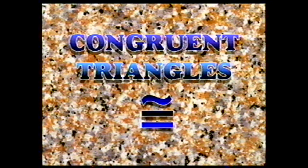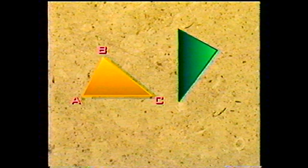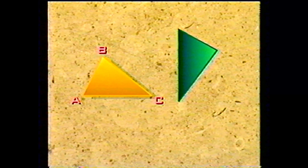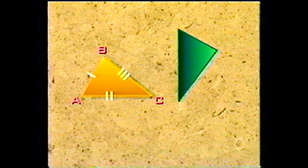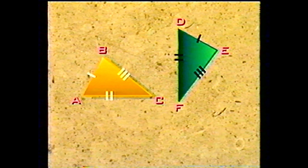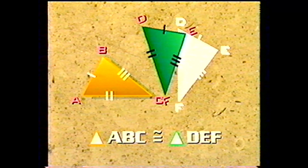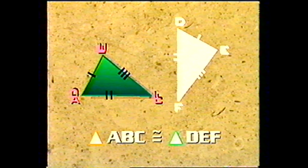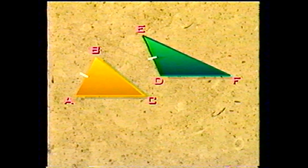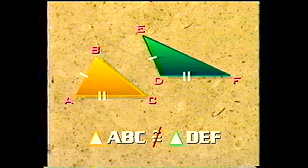We've used the word congruent often in our study of geometry. We say that angles are congruent if they have the same measure, and line segments are congruent if they have the same length. Now we say that two triangles are congruent if they have exactly the same size and shape — the three sides of the first must be exactly the same lengths as those of the second, and the three angles must be exactly the same measure. In other words, if you cut out one triangle and move it over the second, they must fit exactly. It is not enough for one or even two of the sides to have equal length.